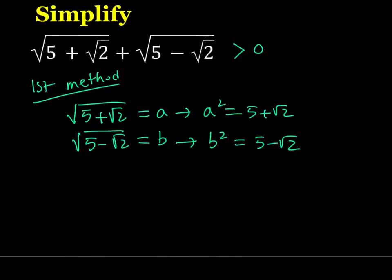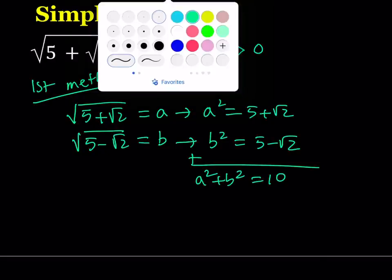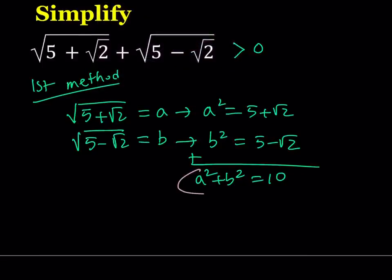Now, we have a squared and b squared. If you go ahead and add these up, we get something nice. a squared plus b squared becomes 10. The square root of 2 cancels out. That's something that we are going to be using later on. Let's go ahead and keep that for now.